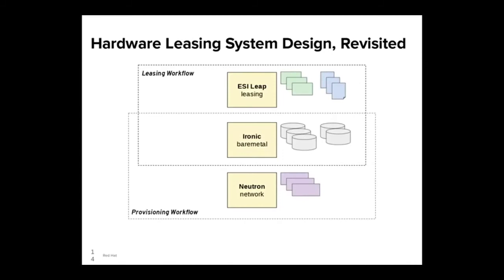Let's take one more look at the service architecture of our hardware leasing system, and hopefully you have a clearer picture of how all the pieces interact. One thing I really want to emphasize is how disconnected our leasing and provisioning workflows are. Maybe you don't need the concept of lessees, or maybe you're fine with owners assigning lessees themselves. You can do whatever you want there and still take advantage of all our work in the provisioning space with Ironic node multi-tenancy and simplified CLI commands.